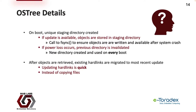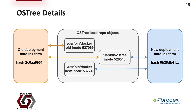On each boot, a unique staging directory is created. If an update is available, objects that refer to files are stored in the staging directory, and after an object is written, a call to fsync is made to ensure objects are written to disk. In the case of a power loss, the previous directory is invalidated and on boot an entirely new directory is created. This serves as the crux of the inherent atomic nature of OSTree. After all objects are retrieved, the existing hard links are updated to point to the new files — a much quicker operation than actual file operations. This diagram shows how hard links are migrated on a file-by-file basis; the hard link update process is also atomic, so if power is lost, OSTree can pick up where it left off on the next boot cycle.